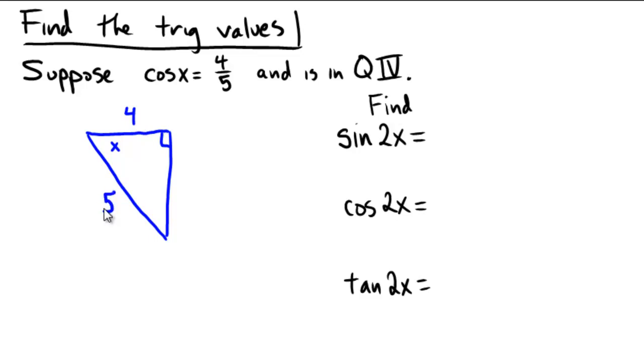To find the third side of the triangle, the missing side, we'll use the Pythagorean Theorem. And notice that 4 squared plus b squared is equal to 5 squared. So that 16 plus b squared equals 25. b squared equals 9. And so b equals plus or minus 3.